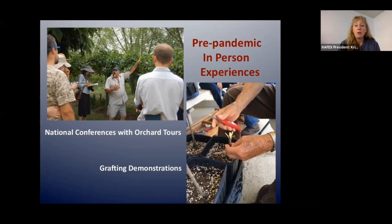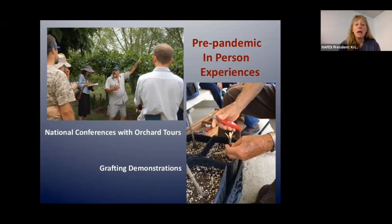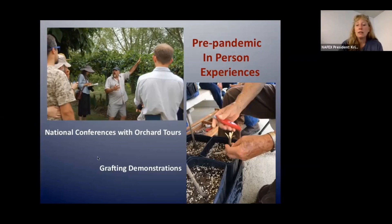We hold national conferences. Prior to the pandemic, we would meet once a year with orchard tours. The first one I attended was four years ago in Danville, Illinois, then one in Iowa. In 2020 we were scheduled to meet with the California Rare Fruit Growers in Santa Rosa, but that got canceled because of the pandemic. We do hope to bring in-person experiences back once we're out of the pandemic. At those events there would be grafting demonstrations, chances to share, and a show and tell where everyone brings things they're making or testing.